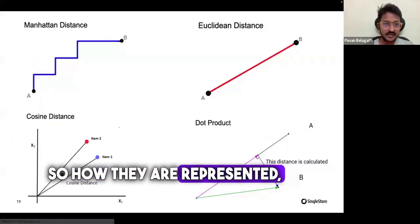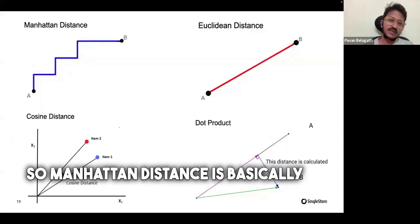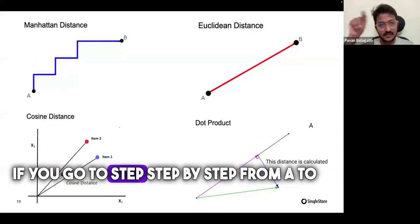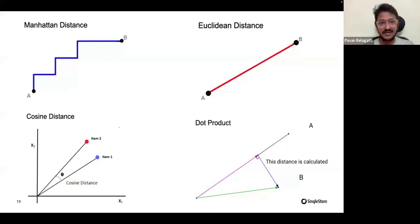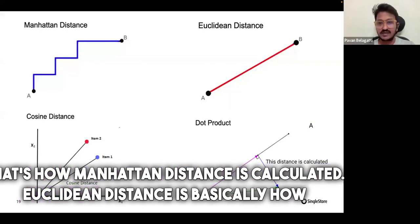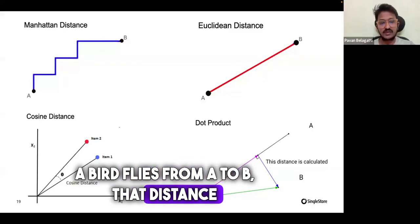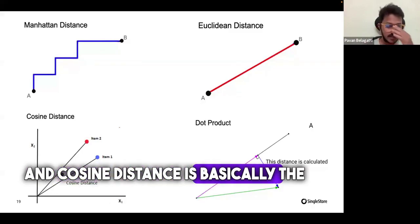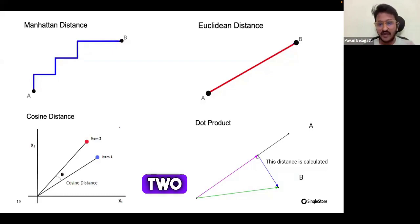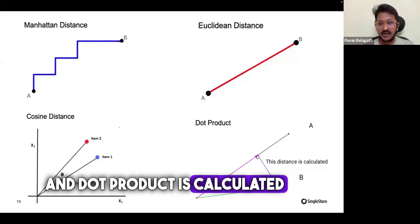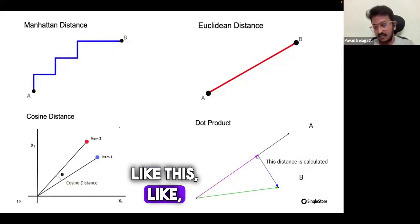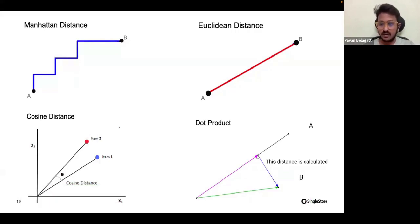Manhattan distance is calculated step-by-step from A to B. Euclidean distance is how a bird flies from A to B. Cosine distance is the degree between two vectors. And dot product is the perpendicular distance between the two vectors.